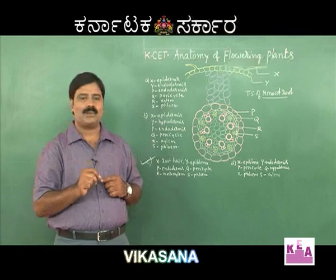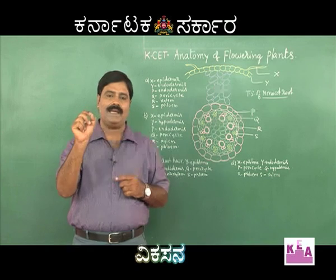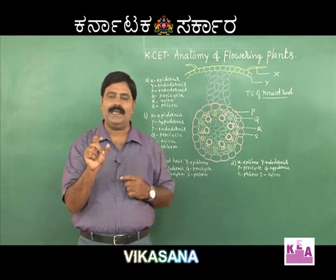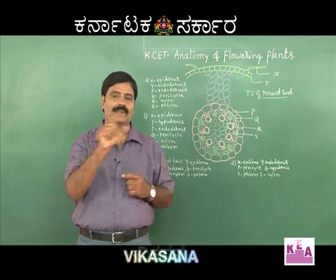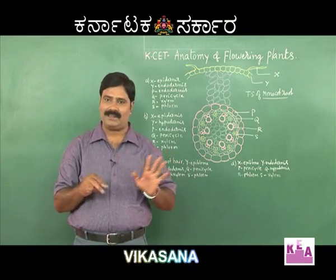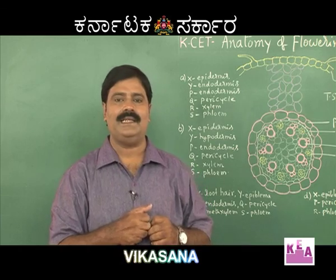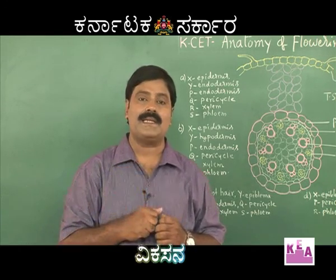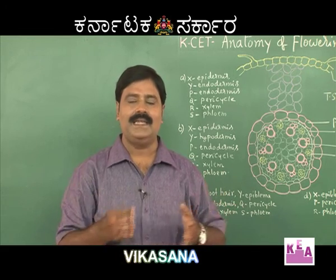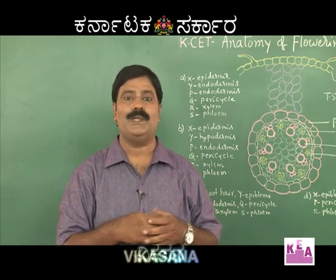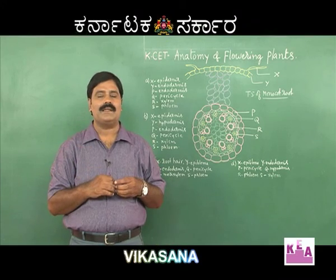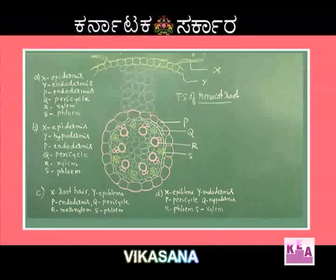For a dicot root, important aspects are: radial type of vascular bundles, tetrarch arrangement, and pith is usually absent or very little. Monocot root has unicellular root hair and epiblema. When we go to the dicot stem, we observe epidermis with multicellular hairs called trichomes. The stelar arrangement is different: dicot stem shows eustele arrangement, while monocot stem shows atactostele. The right option remains C.